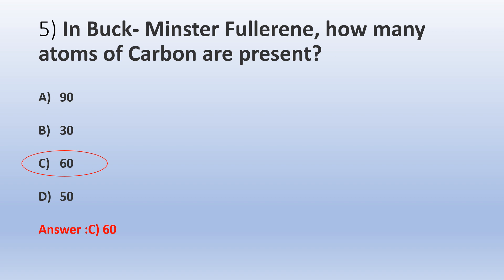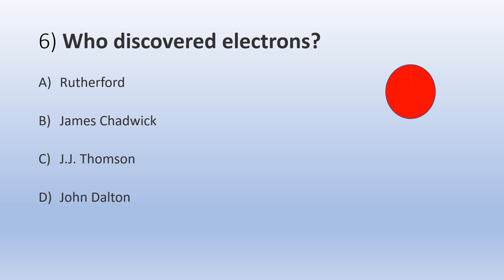The correct answer is C, 60. Buckminster Fullerene is also called C60 compound. It consists of 60 carbon atoms that are linked together to form a cage-like structure that is hollow in nature. This allotrope of carbon is very good conductor of electricity and extremely strong in nature.